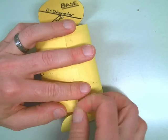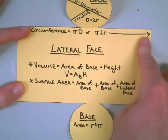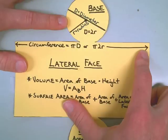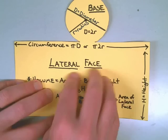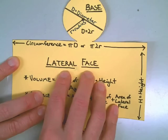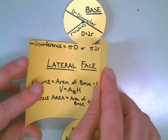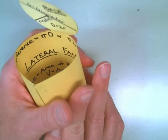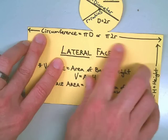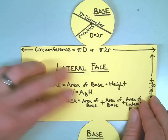When it comes to surface area, we've got the two bases — top and bottom — and a lateral face. The base has a diameter, which goes all the way across a circle through the center point. The radius goes halfway across the circle through the center point toward the edge. The circumference is defined on the lateral face because it is the distance across the lateral face, and when you roll up the lateral face, it equals the circumference of the base.